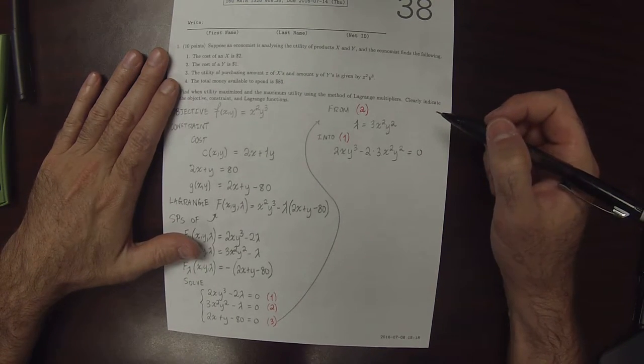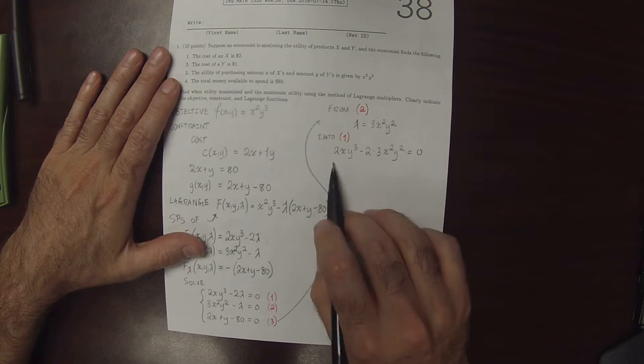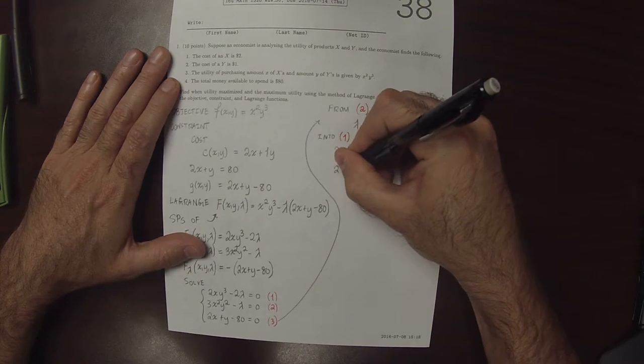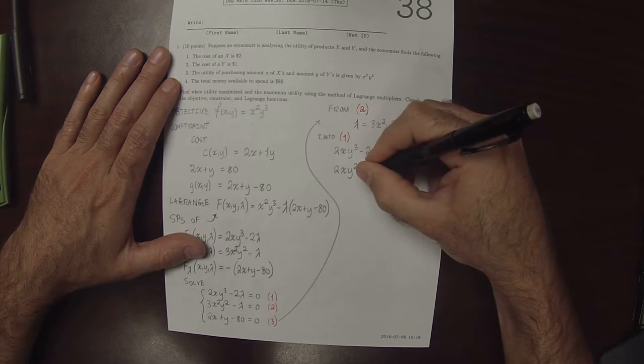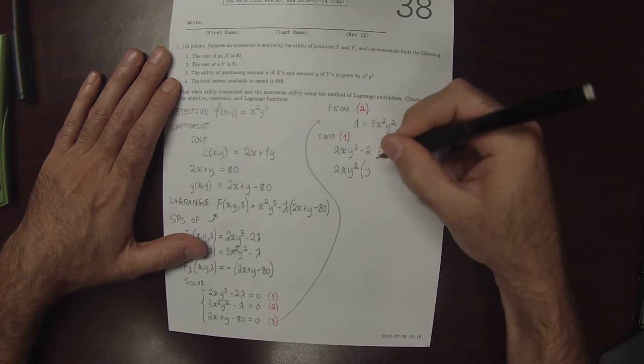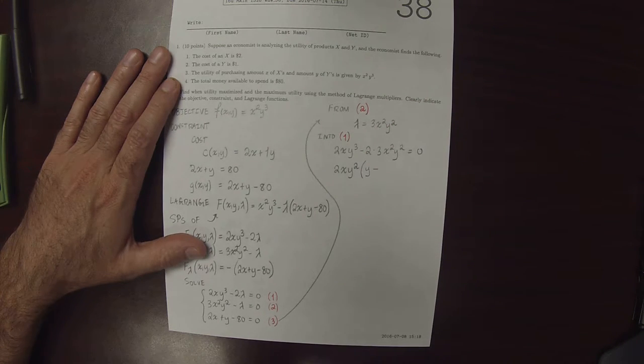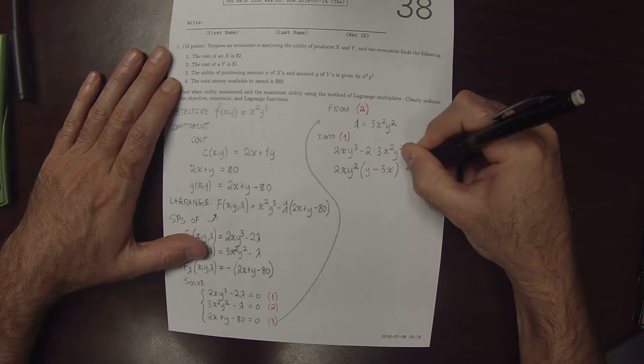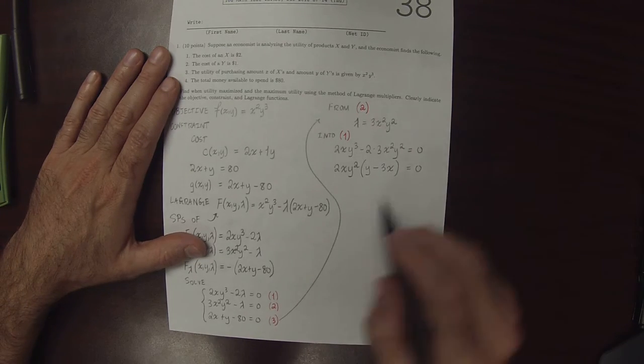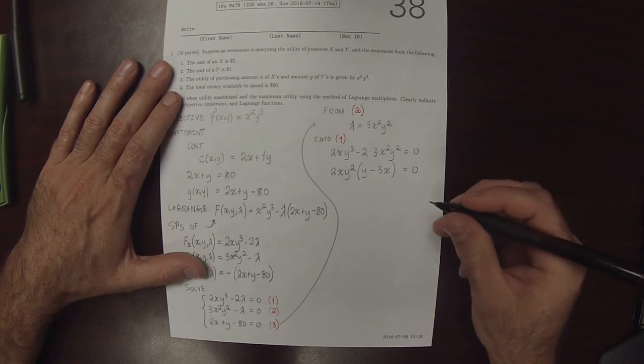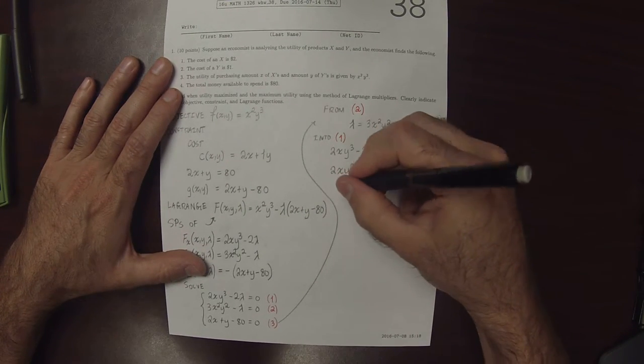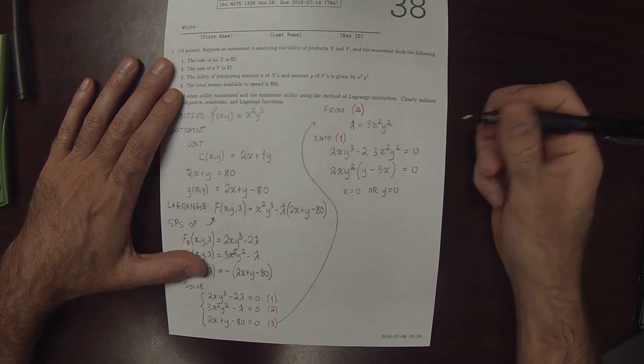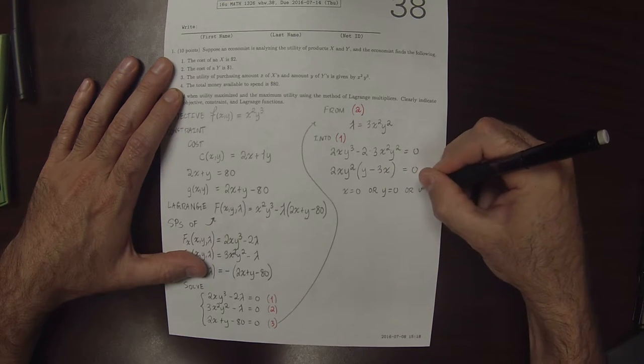Let's factor out all the common things. I can see that 2 is common, x is common, and y squared is common. So 2xy squared. Factoring that out of the first term leaves a y. Factoring out of the second term leaves a 3x equals zero. For this to be true, either x is zero or y is zero or y equals 3x.